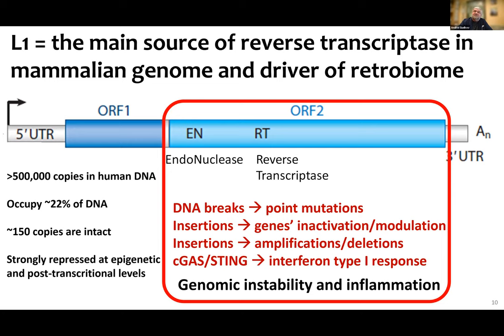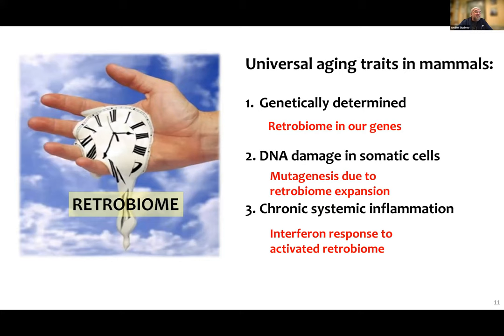This closely resembles the properties we suspected in the timer of longevity. If we think about this trio, we see that the retrobiome very nicely satisfies all the conditions. The retrobiome is encoded in genes, so whatever it does is genetically determined. It can cause DNA damage in somatic cells without depending on cell divisions, and it can cause chronic systemic inflammation.